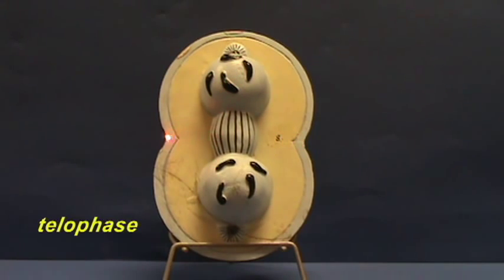The process of cytokinesis, where the cell actually starts to divide, is represented here by this cleavage furrow that you can see on either side of this model.